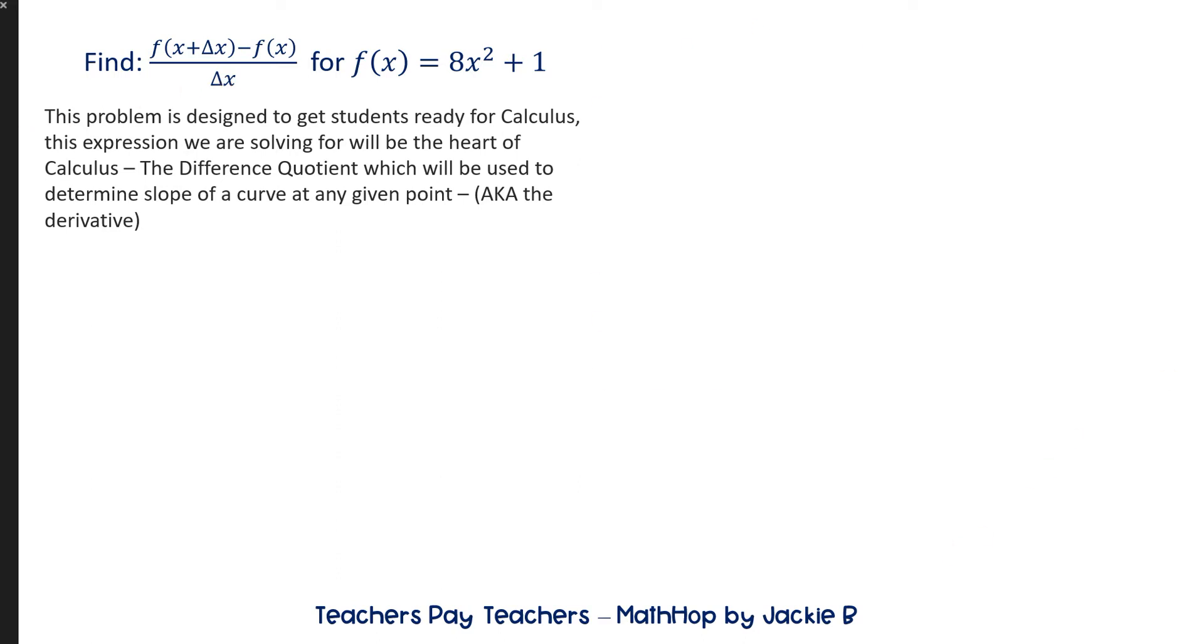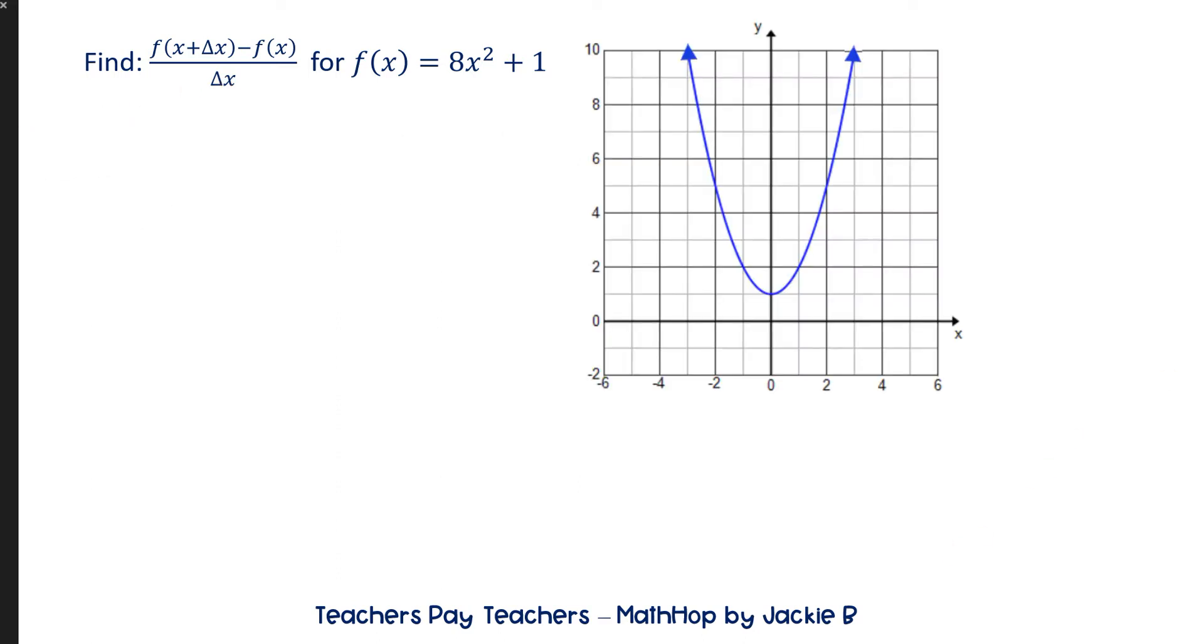So if we were to look at this equation 8x squared plus 1 and just pick two points, we'll pick x and then x plus delta x. So what that means is in between those two points is the change in x. So if this distance is 5, delta x is 5 and this is x plus 5, right? But it's just giving it to you in weird symbolic format.